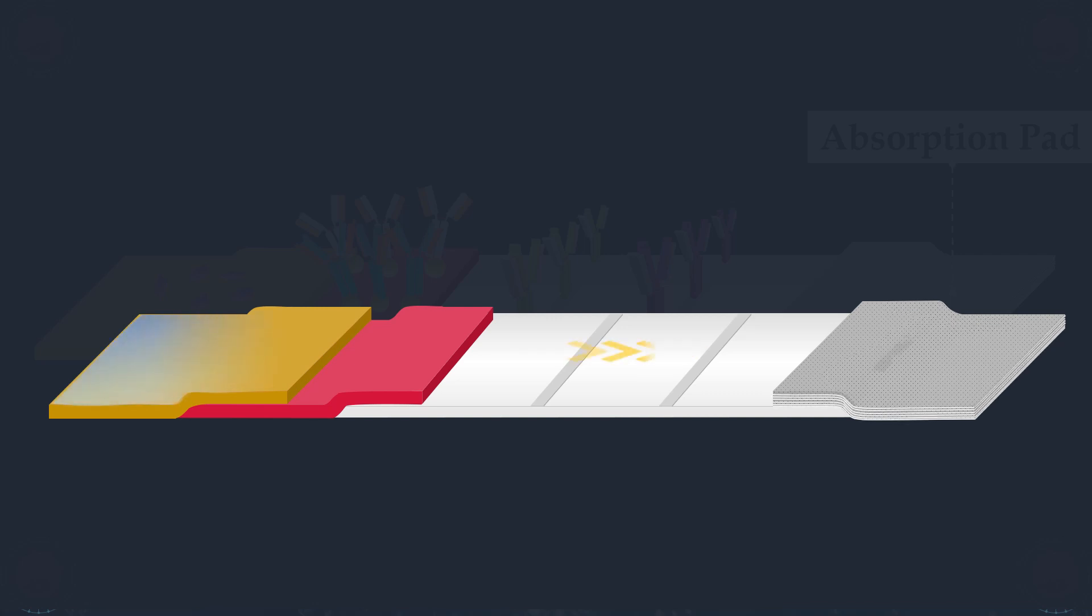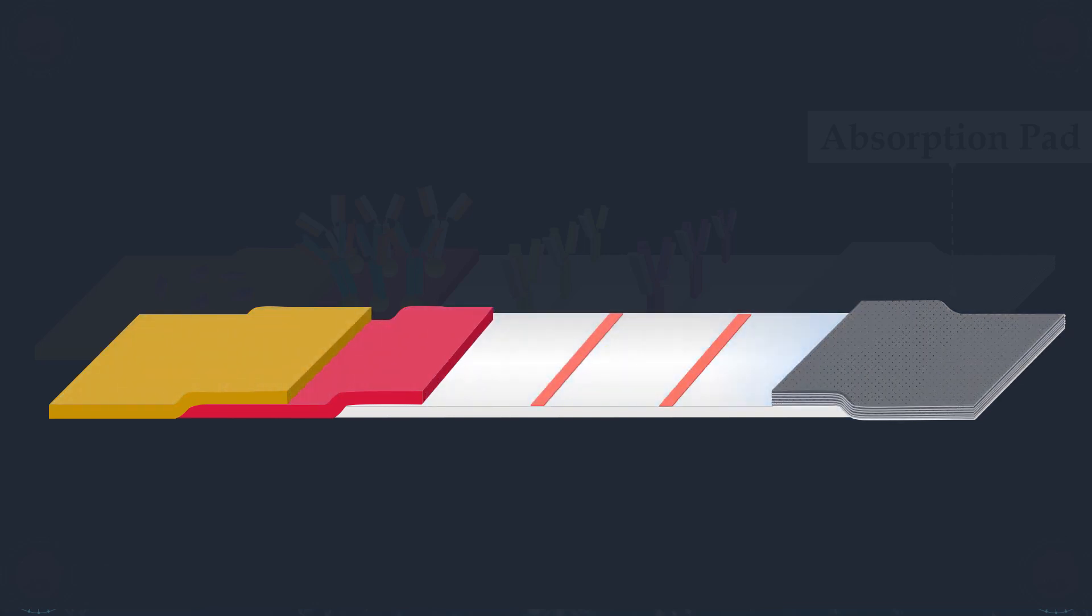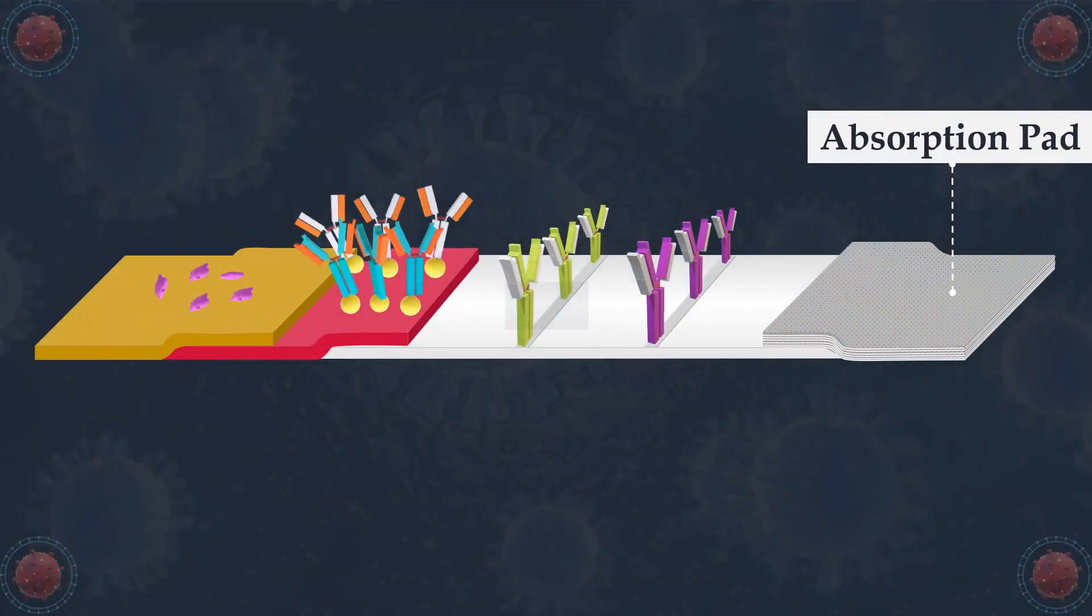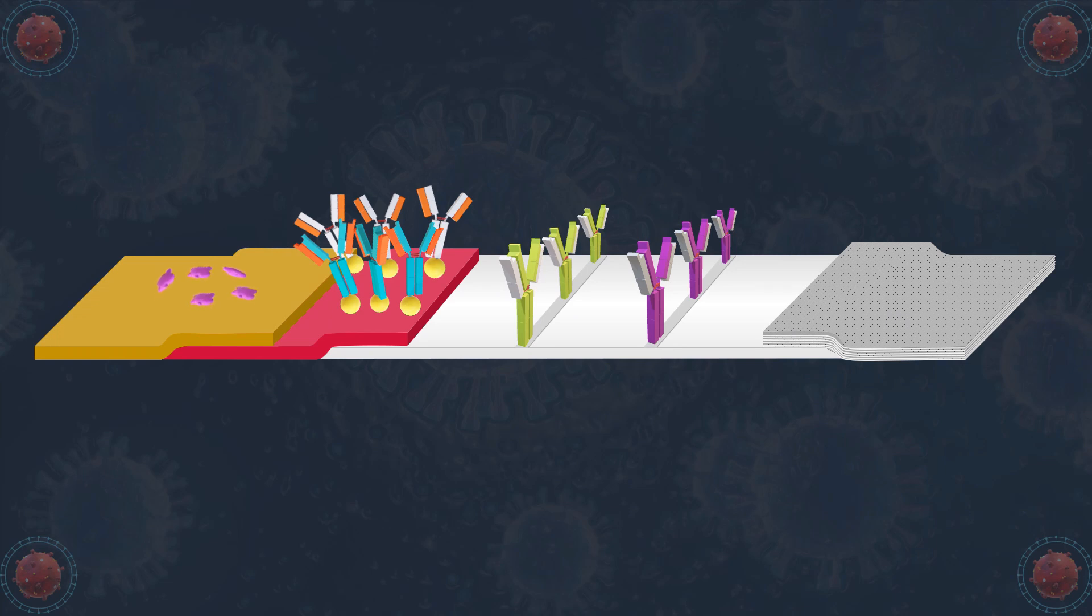The sample migrates laterally across the membrane by capillary action. When the test is performed, the antigen in the sample reacts with the gold anti-SARS-CoV-2 antibody conjugate in the conjugation pad.